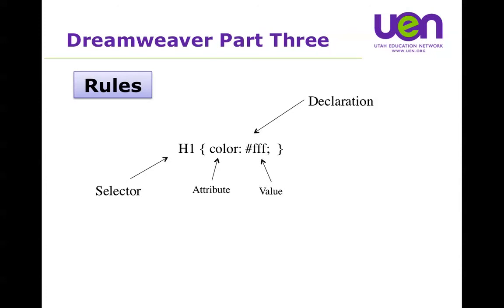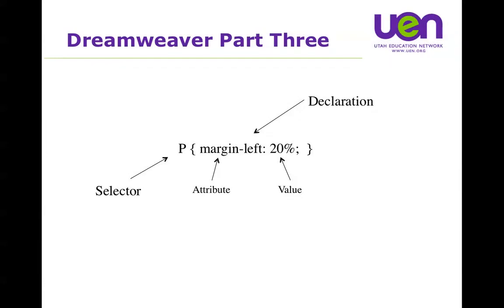Here's another example: a rule that styles the P tag. I've got the selector identifying which part of HTML, and then I've got the declaration with the attribute I'm going to style and the value I want. So margin-left: 20% - I'm just saying, create a margin on the left side of each paragraph that's 20%.